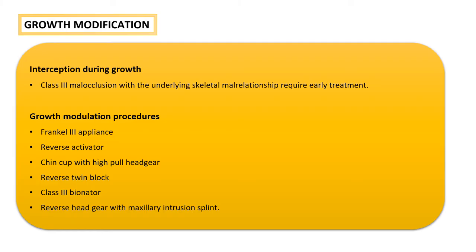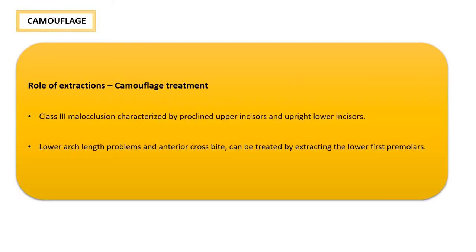Growth modification during the growth period can be undertaken to treat underlying skeletal malocclusion. Growth modulation procedures utilize appliances such as the Frankel 3 appliance, reverse activator, chin cup with hypo headgear, reverse twin block, Class 3 bionator, and reverse headgear with maxillary expansion splint. The rule remains to intercept as early as possible to reduce treatment duration and inhibit mandibular growth, thereby correcting the skeletal relationship at an earlier age.